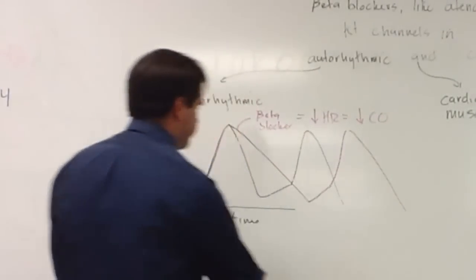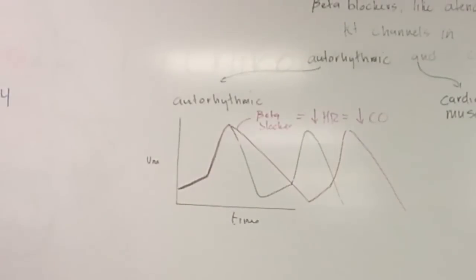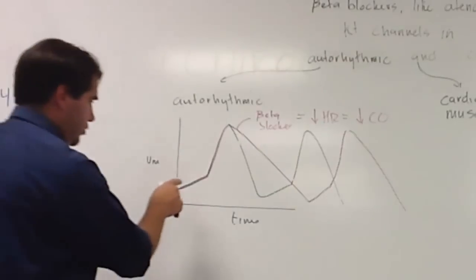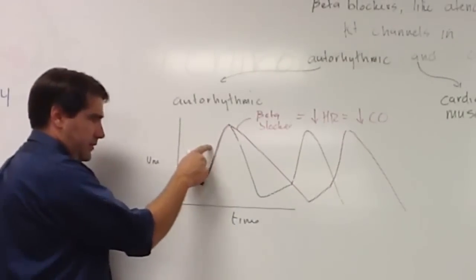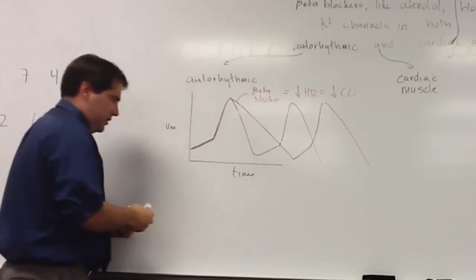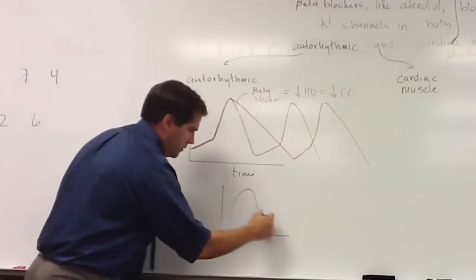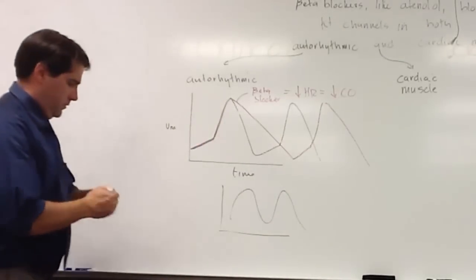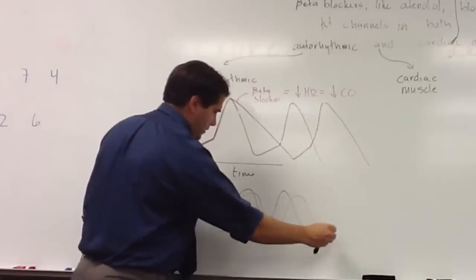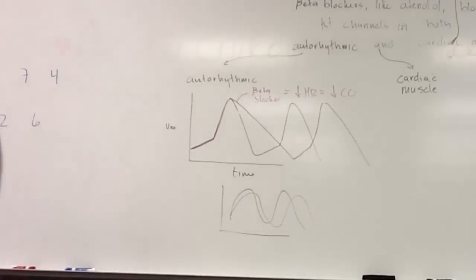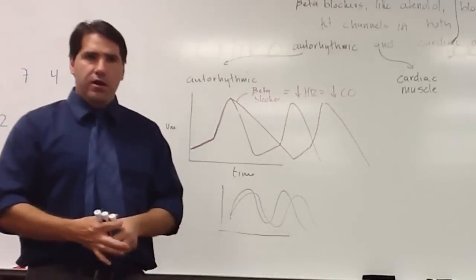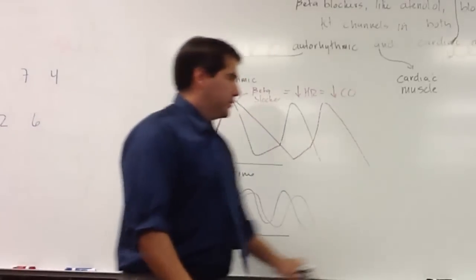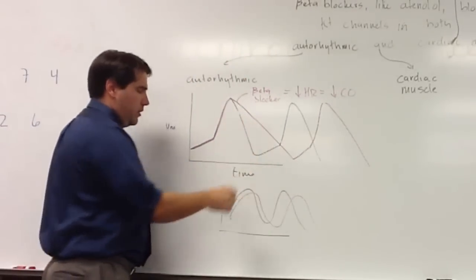So I think that if you draw it pretty much like that, and I guess I'm just going to have to make the assumption that you understand enough about the action potential that you're showing me that you know it's not affecting sodium, it's not affecting calcium, it's only affecting potassium. Now that's not to say that you can write something like this, and that that shows me that you know what's going on. So that would not be worth credit because you're not showing me the specific shape of the autorhythmic action potential and the specific effect of the beta blocker on potassium.